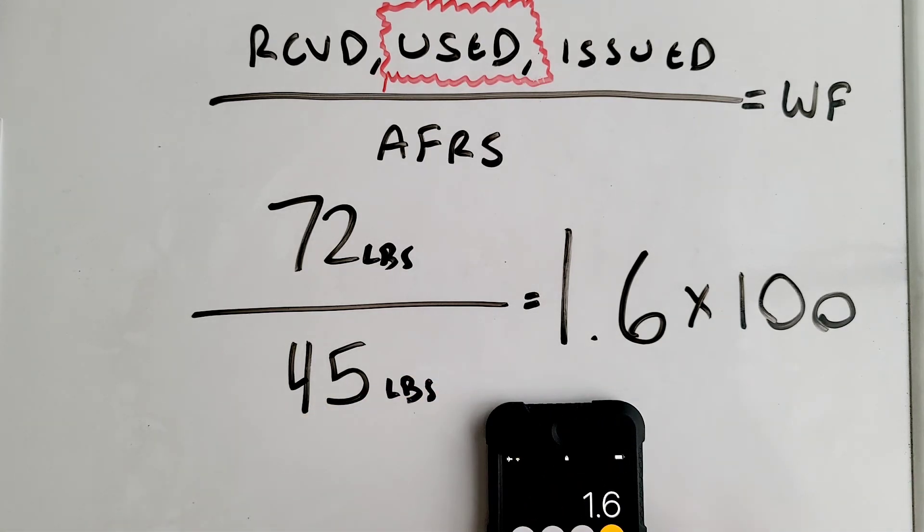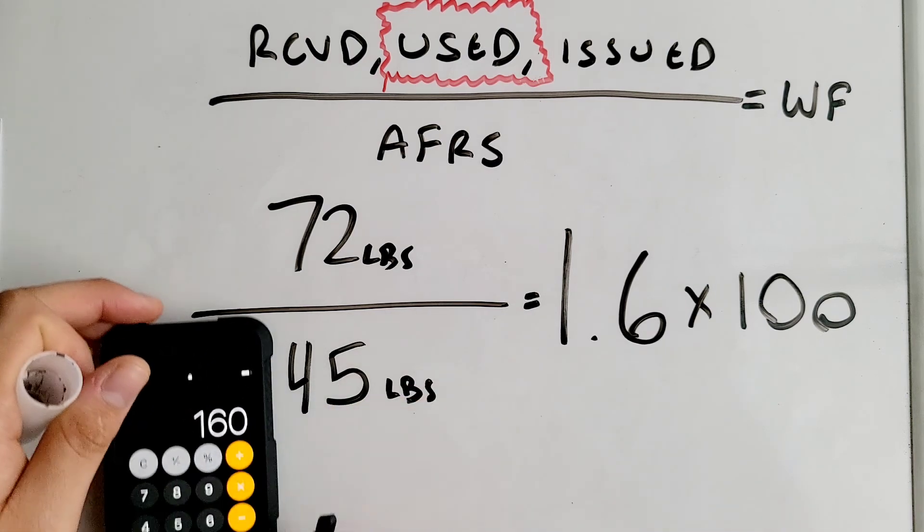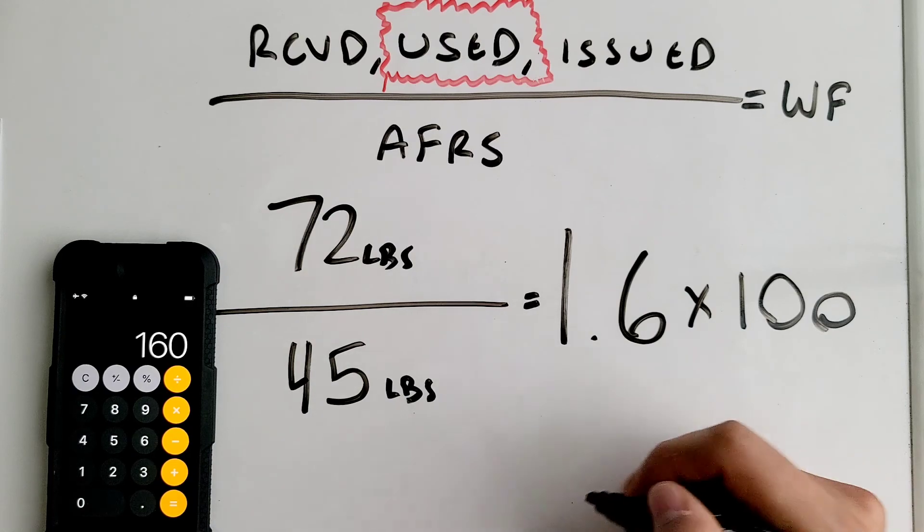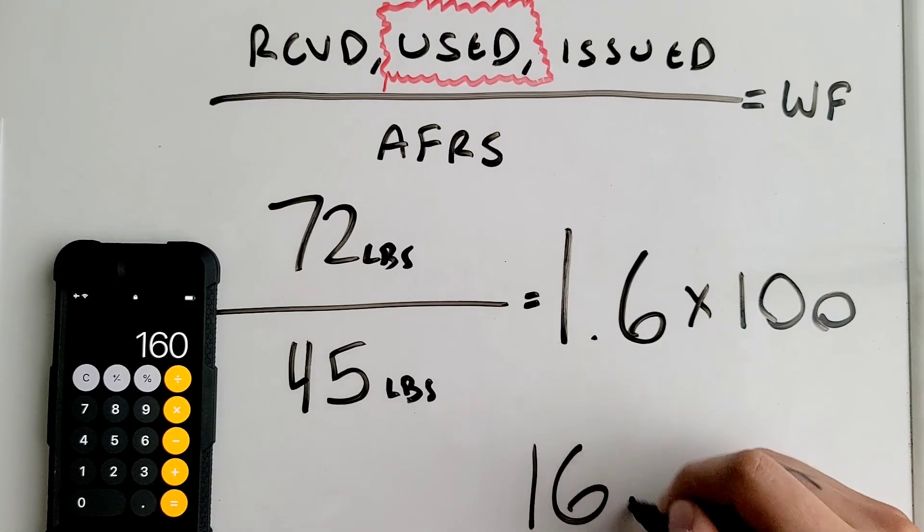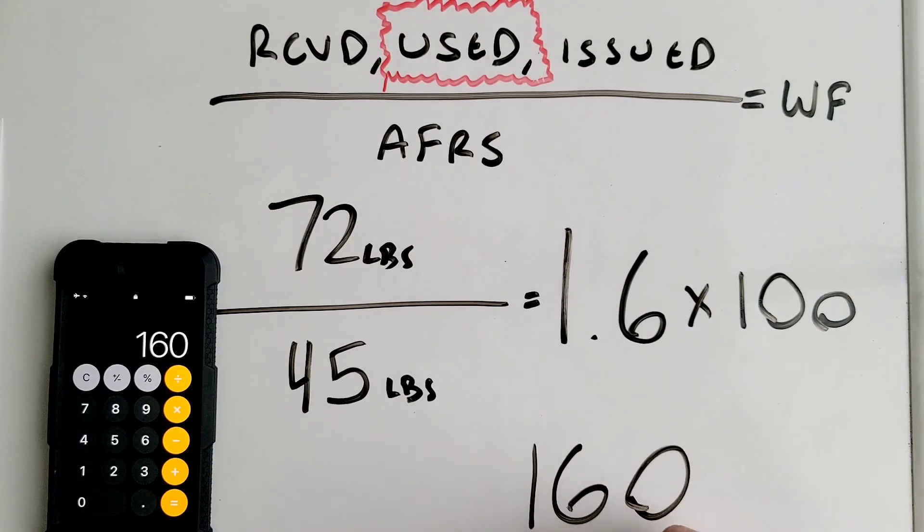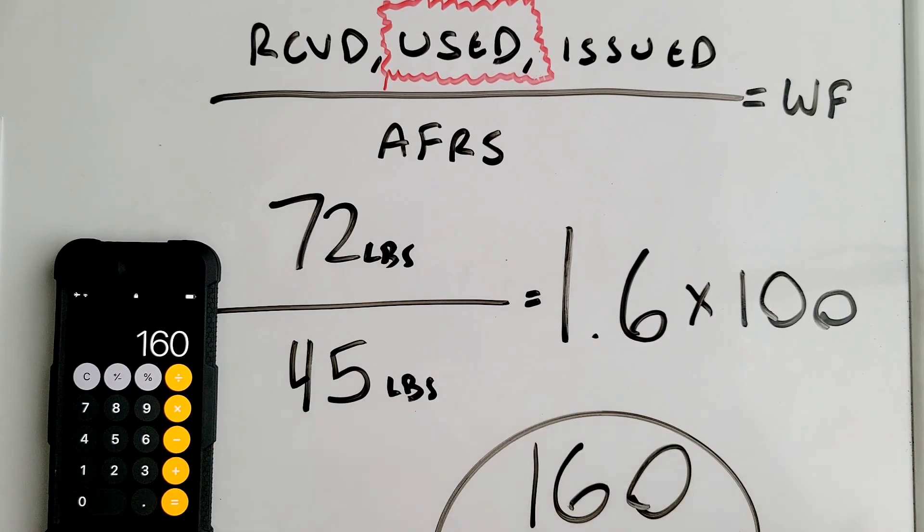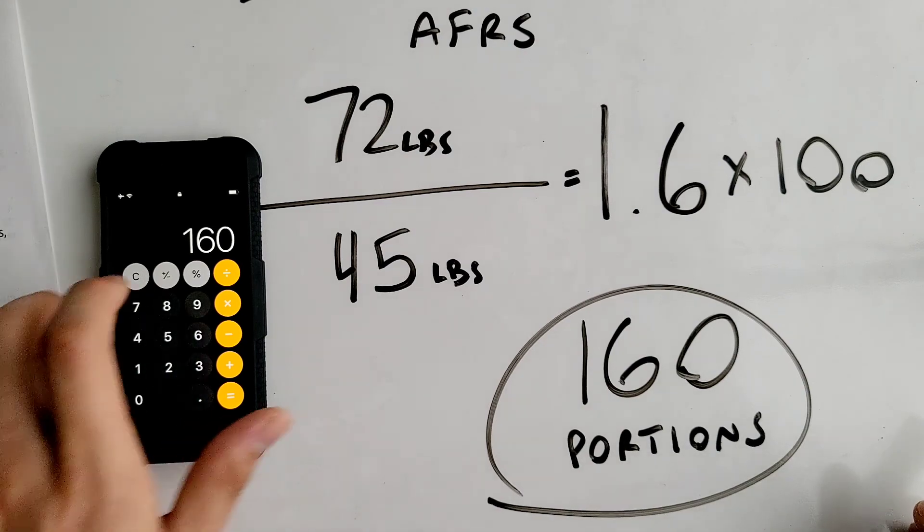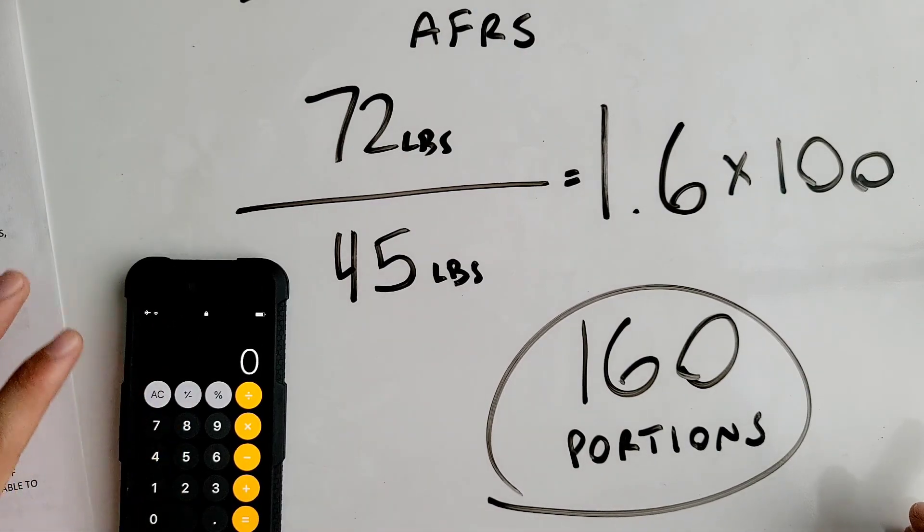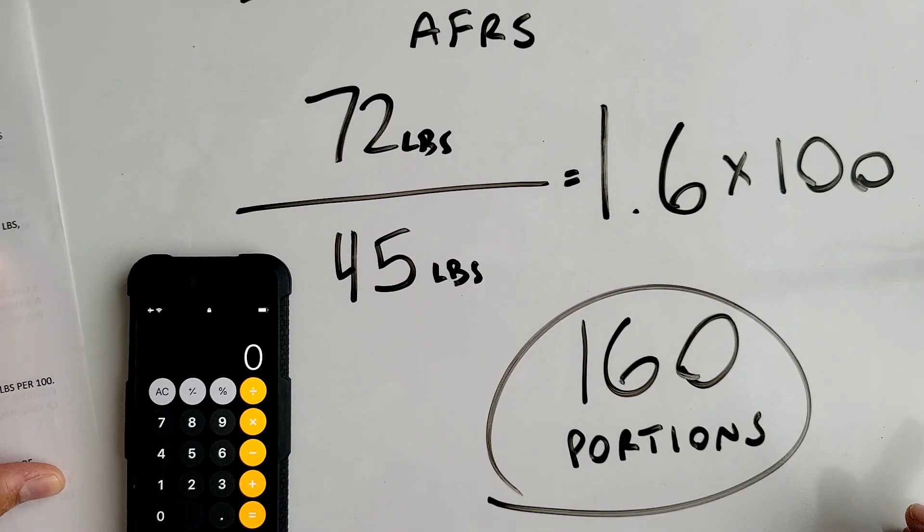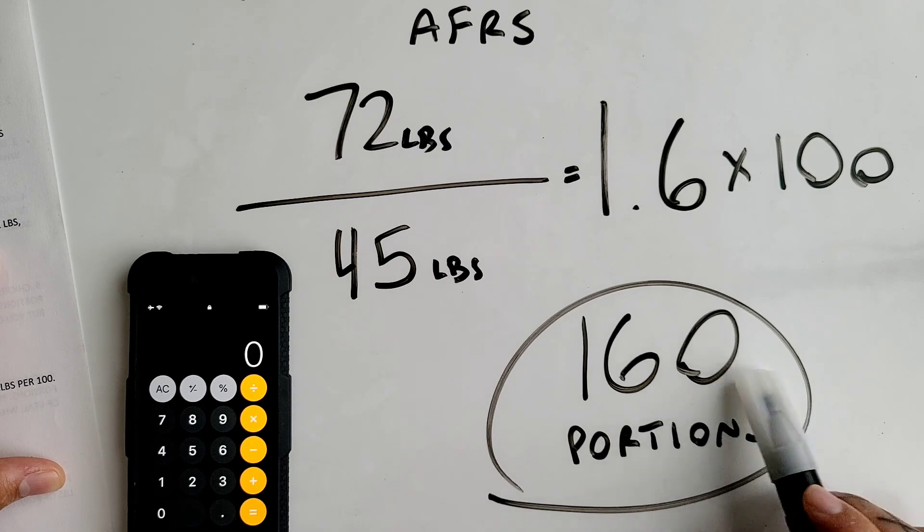So it equals 160 portions. With 72 pounds of chicken nuggets that you used, you were able to make 160 portions.